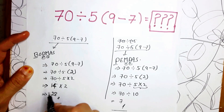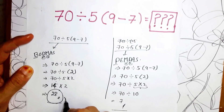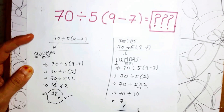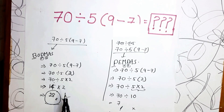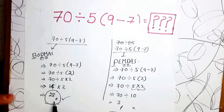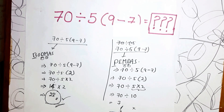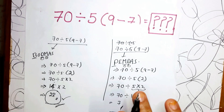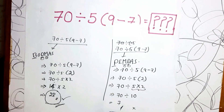Between these two answers — 28 and 7 — 28 is the correct one. According to the modern interpretation of order of operations, 28 is correct, not 7. I hope you got the answer and understood this well. Thank you so much for watching.